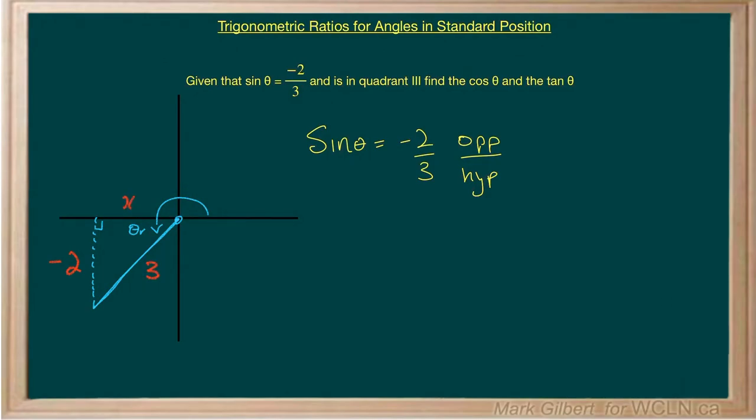So what we need to do is find that side x. We can use Pythagoras. 3 is our hypotenuse. So we will have x squared plus negative 2 squared is equal to 3 squared. So x squared plus 4 is equal to 9, minusing 4 from both sides. x squared is equal to 5, so x is equal to root 5.